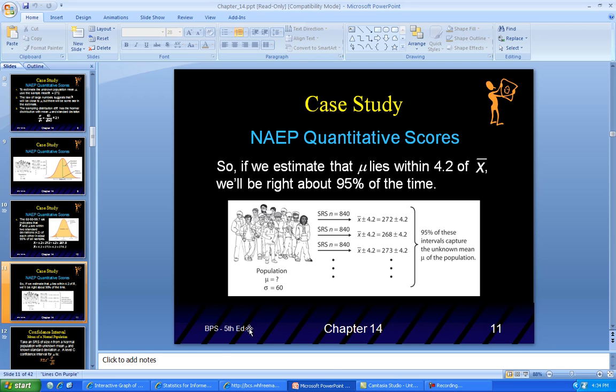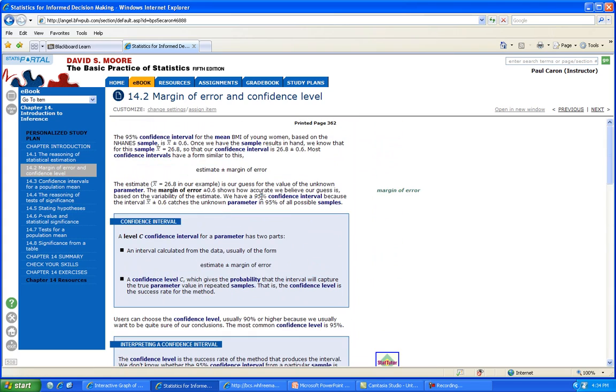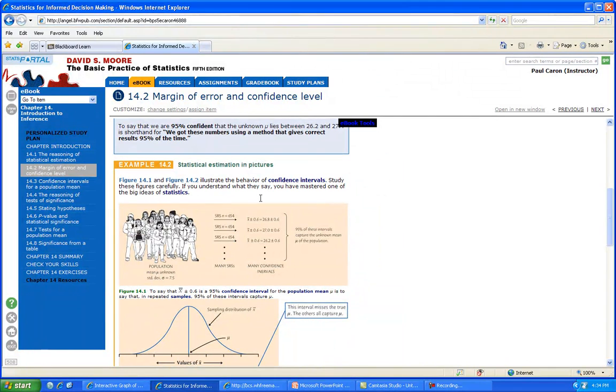What does this look like? Here's an example from your book on page 362. If you took a sample of 654 students, you'd get this interval. Then a second time with 654 students. You keep doing these surveys, these simple random surveys, and you're going to get all these results.